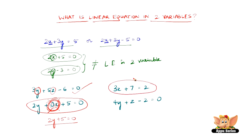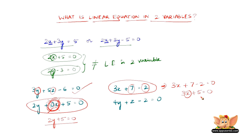Next, 3x plus 7 equal to 2 — there are two constants here. We can rewrite this as 3x plus 7 minus 2 equal to 0, which is 3x plus 5 equal to 0. There is just one variable, so it is a linear equation in one variable. Finally, 4y plus z minus 2 equal to 0 very clearly has two variables, y and z, and is therefore a linear equation in two variables.